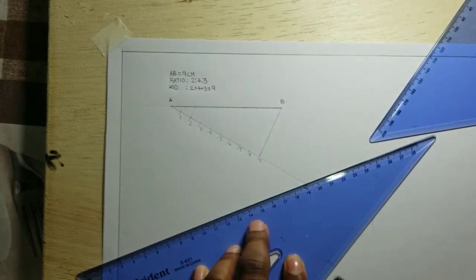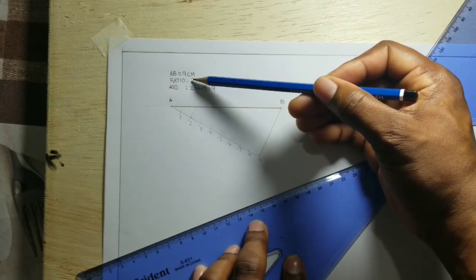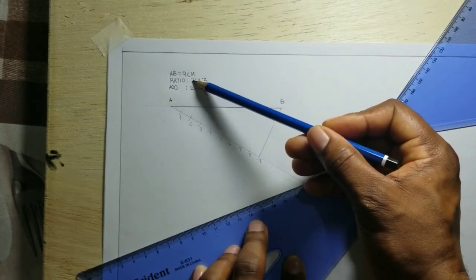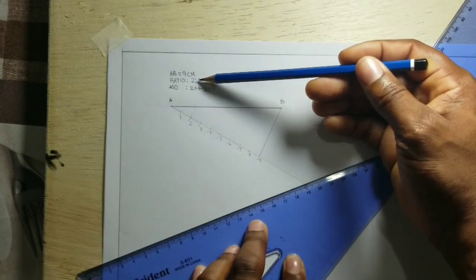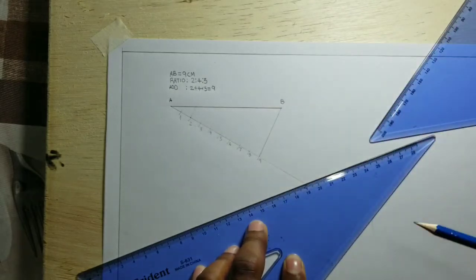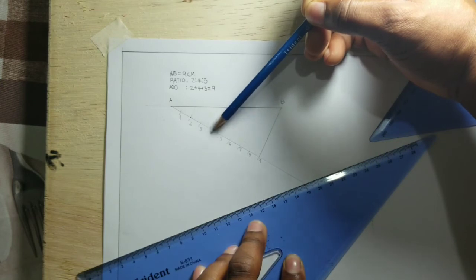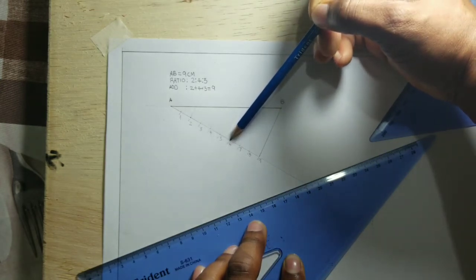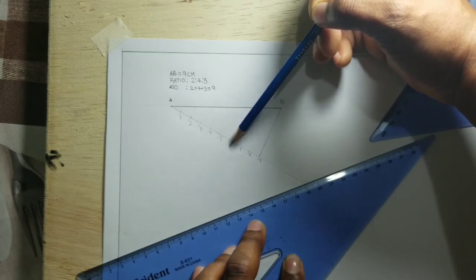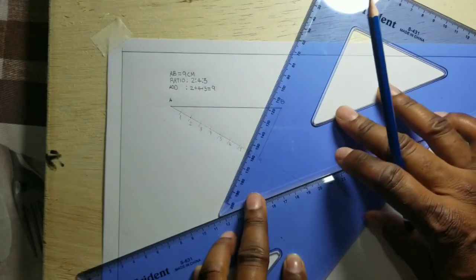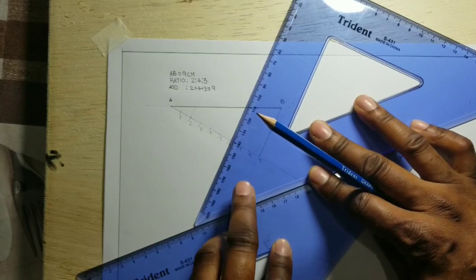Now the next step is to look at our ratio once more. We have just done this part which is one, two. Now we look at the middle of the ratio which is four, and we are now going to count four divisions. So this is one, two, three, four. So right at six we will also need to draw another line to our line AB. Remember you cannot move set square B or the second set square at all.